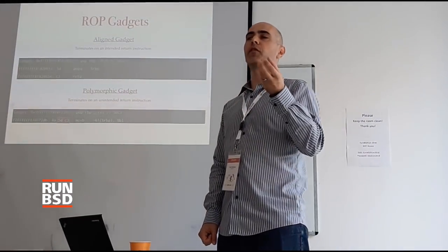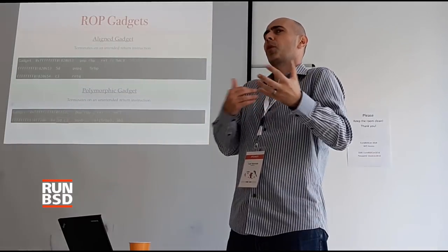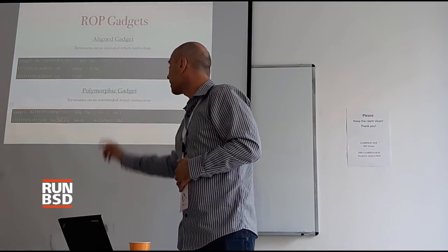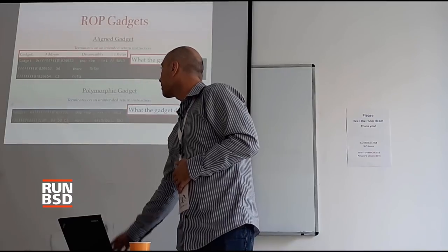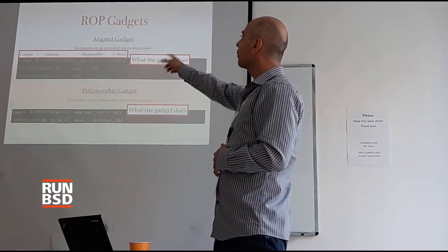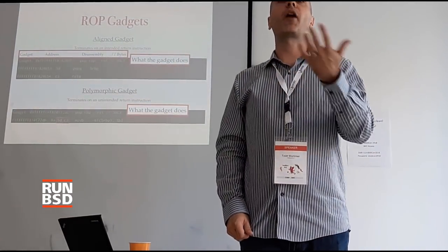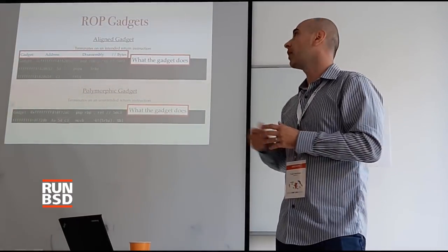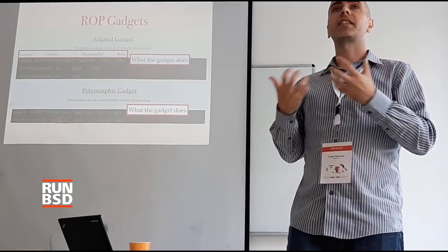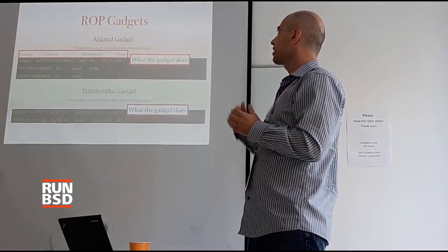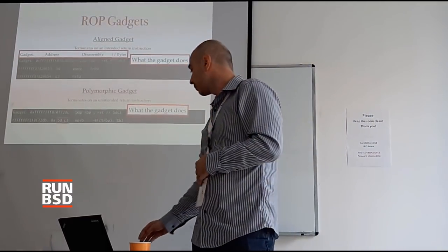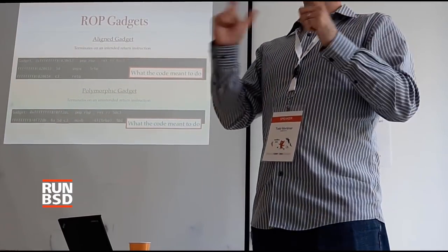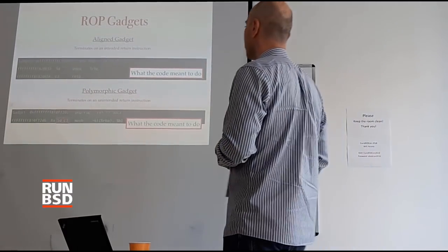A polymorphic gadget is disassembling from a point of the program you're not supposed to go to, and you end up having a return there by accident. I'm going to have displays showing gadgets and then the intended executable. At the top line it'll say 'gadget' — that's what some tool has found. Then we'll have the address of the gadget and the disassembly. For example, the top one is 'or rbx, ret'. Then there's a double-slash and then the bytes — the actual bytes in the program text. The gadget line is what the gadget does; the bottom line is what the code meant to do.